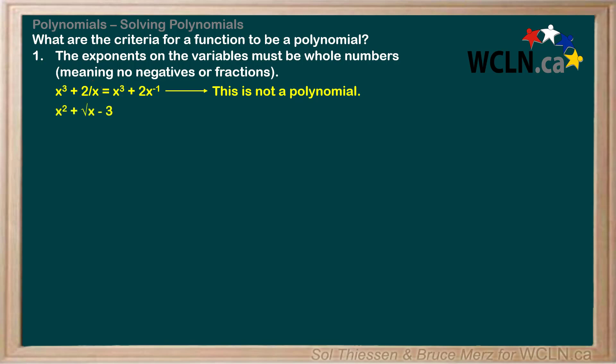Now look at this example. Is this a polynomial? Again, it may look like one, but the answer is no. Since taking the square root of a variable is the same as raising it to the power of 1/2, this is not a polynomial. So we can conclude that a polynomial can't have a radical sign over a variable.